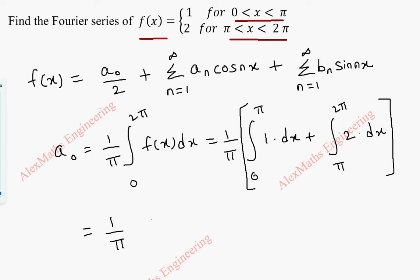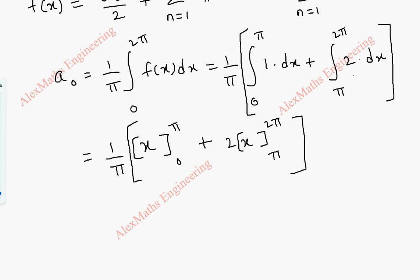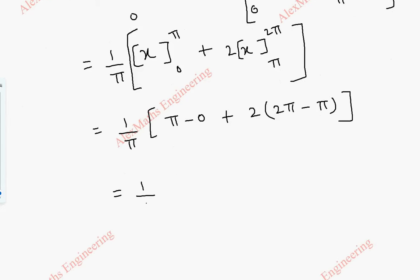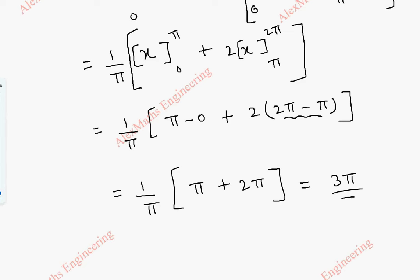Evaluating, we get (1/π) times [x from 0 to π] plus [2x from π to 2π]. Substituting limits: (1/π)(π − 0) + (1/π)(2·2π − 2·π) = (1/π)(π + 2π) = (1/π)(3π). After cancelling, a₀ = 3.